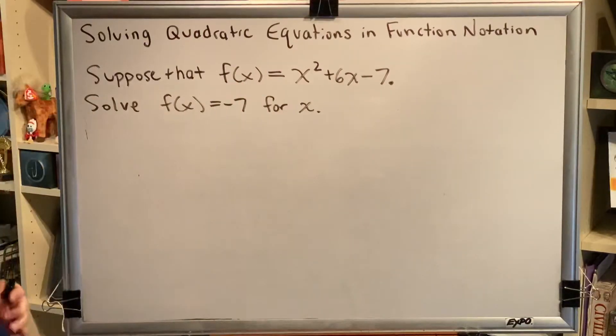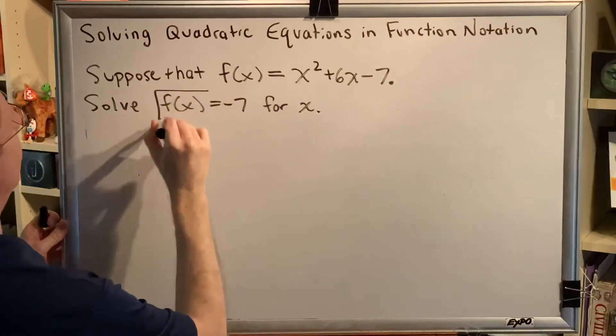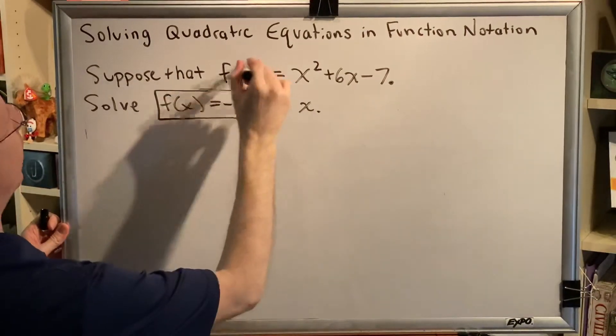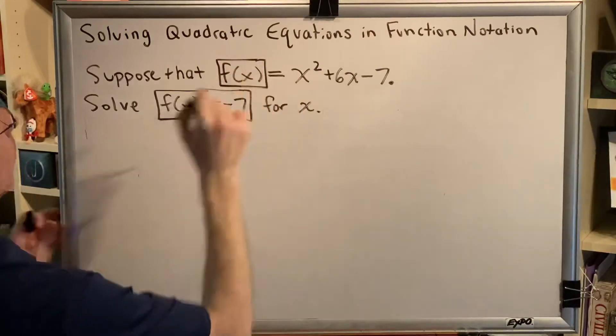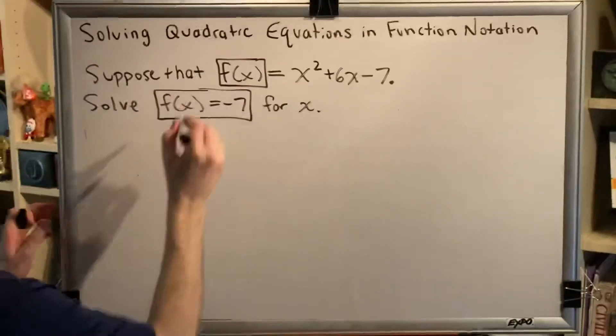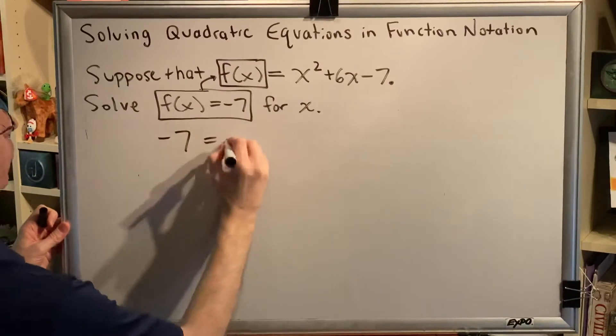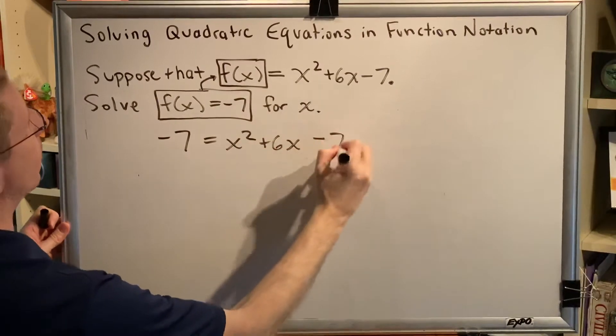So what is the correct way to solve this problem? Well, it's actually pretty easy. This tells me that f of x equals negative 7. And here's an f of x. So replace that f of x with negative 7. Put this in here. So we get negative 7 equals x squared plus 6x minus 7.